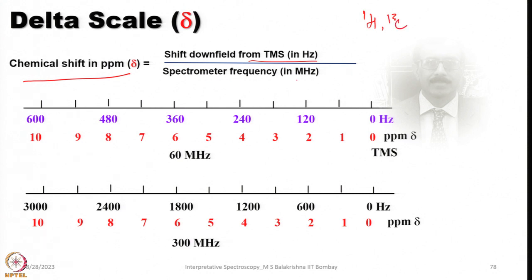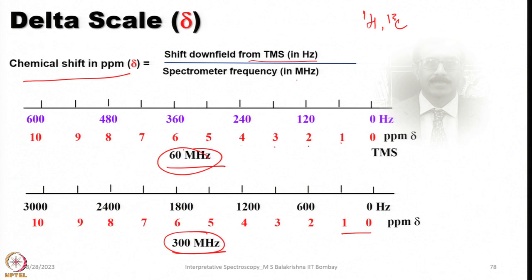The delta scale chemical shift in ppm — shift down from TMS in the case of 1H and 13C — is independent of magnetic field strength. To compare, at 60 megahertz and 300 megahertz, the chemical shift values at 1, 2, 3, 4, 5 ppm do not change — they remain steady in ppm — whereas in hertz they do change. This is the advantage and the reason chemical shifts are always given in parts per million, so that measuring at different magnetic field strengths does not matter.